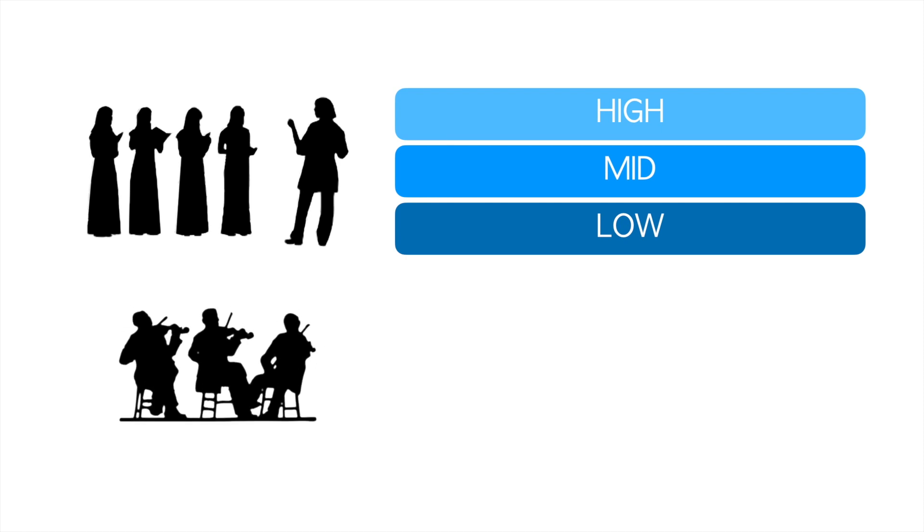Instruments also respond in different ways to key changes. For example, strings will sound less resonant in Db major than they do in G major, since the former key includes almost no open strings, and the latter includes all the open strings.